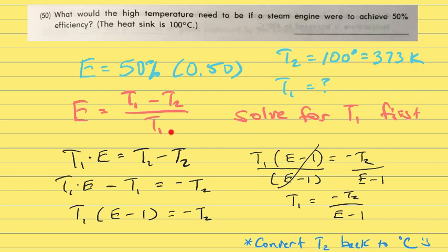So from the pace, we know that this is the formula for efficiency: T1 minus T2, and then we divide that answer by T1. So the difference between the temperatures divided by T1.